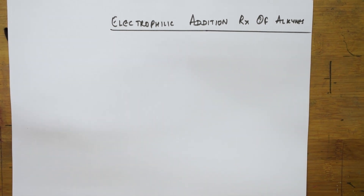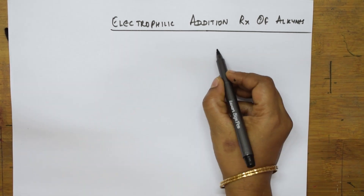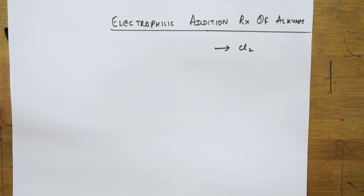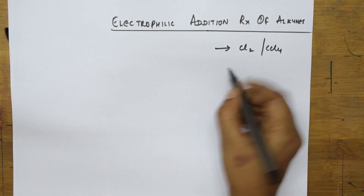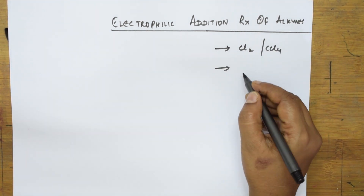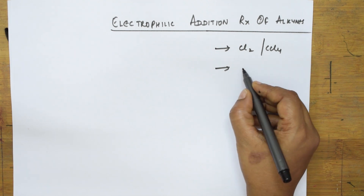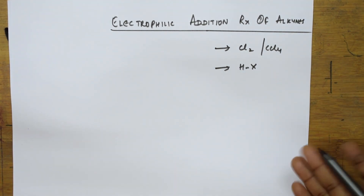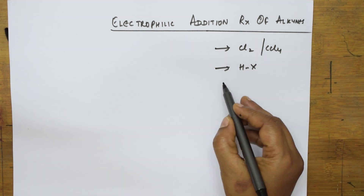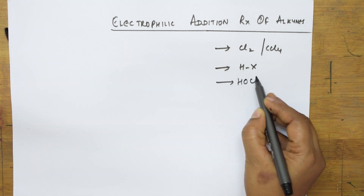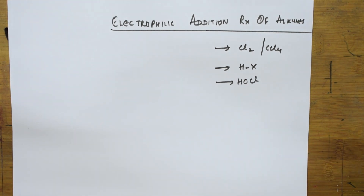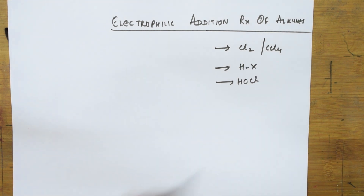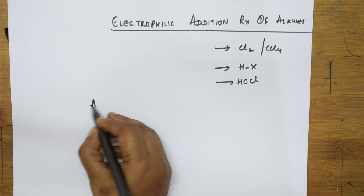In electrophilic addition reactions of alkynes, I will be showing different types of electrophiles — that is, addition of Cl₂ in the presence of an inert solvent, carbon tetrachloride. I will also be showing addition of HX, and after that addition of HOCl, hypochlorous acid. Let us start with the first: addition of chlorine as an electrophile in the presence of an inert solvent.